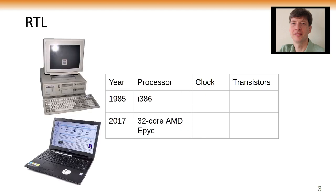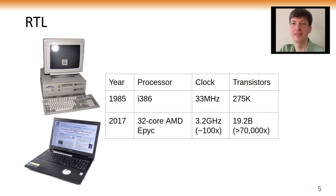RTL came into practice around 1985 — this was the time of the 386 processor, which ran at a clock speed of 33 megahertz. It was fast at the time. Now we're running clocks at 100 times that frequency, so in a single clock pulse when RTL came into practice, we can do 100 clock pulses today in the same amount of time. Transistor counts were 275,000 for the 386; today we're around 20 billion — an increase of 70,000 times.